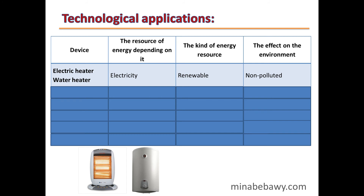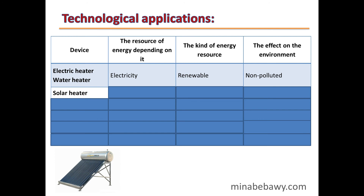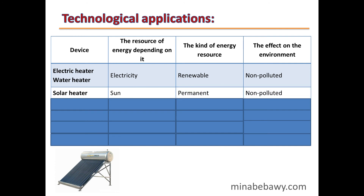Electricity doesn't pollute the environment, so it is non-polluting. A solar heater depends on the Sun. The Sun is a permanent resource of energy and doesn't pollute the environment, so it is non-polluting.